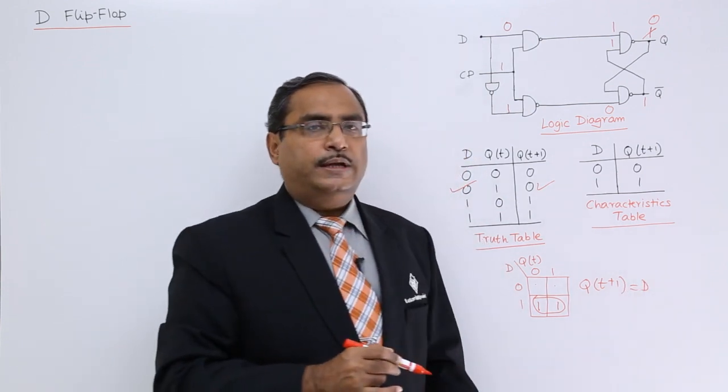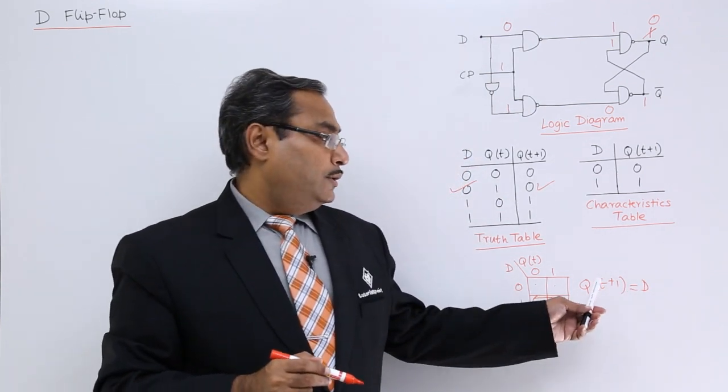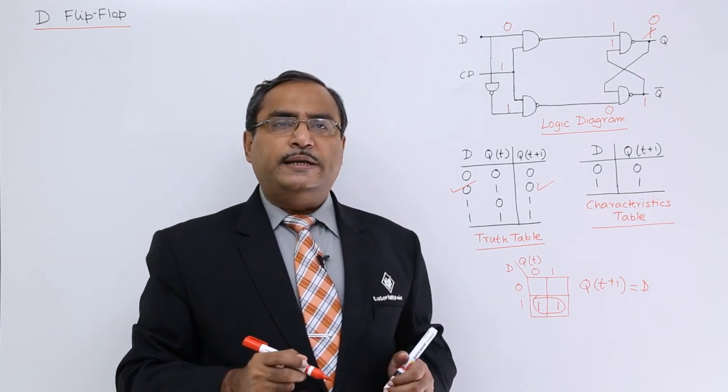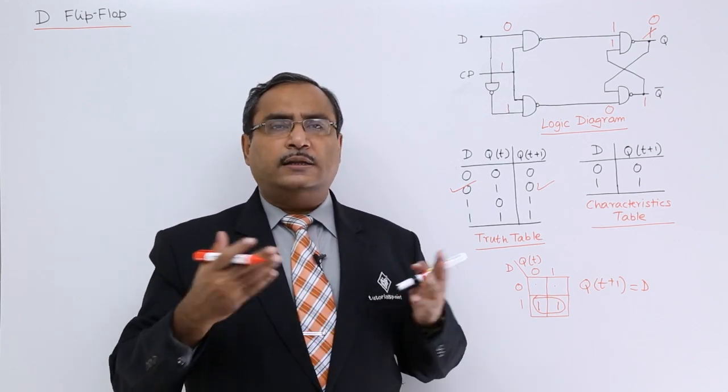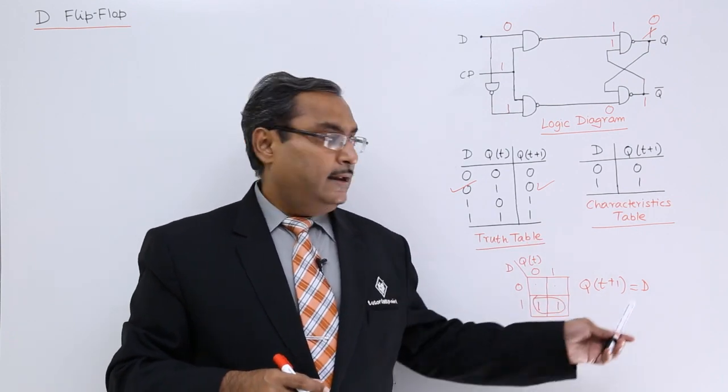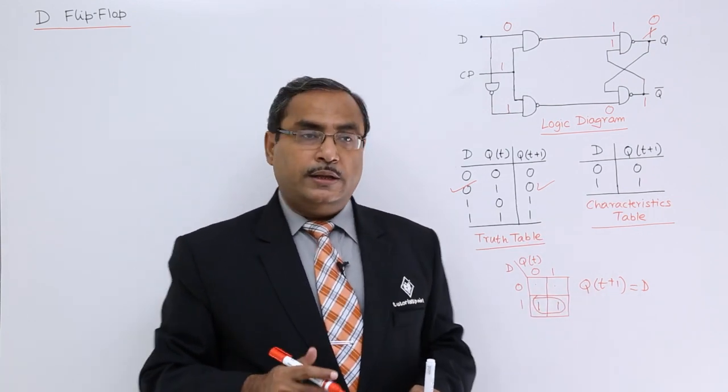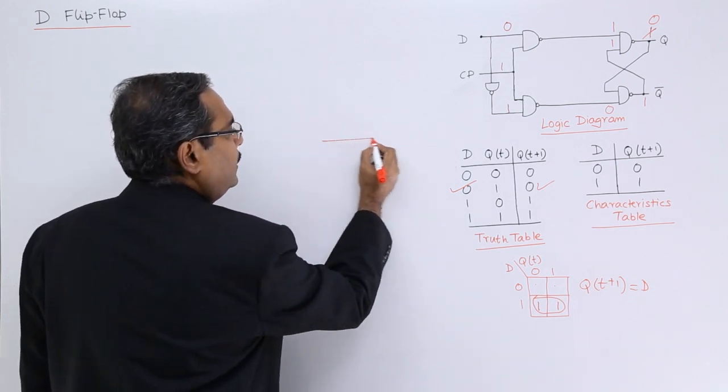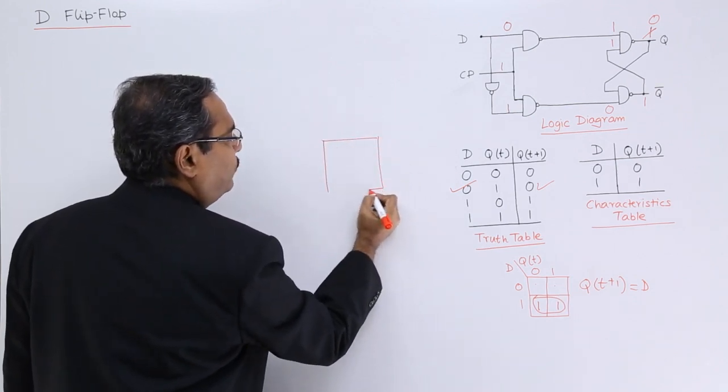That means, the next output is the present input. Using this D flip-flop, we shall be designing different registers and other different circuits. But this characteristic equation will indicate that the present input will go to the output as well. This is the block diagram of D flip-flop.